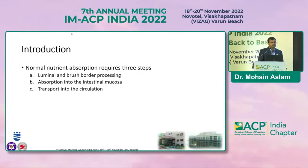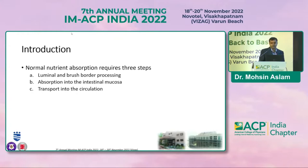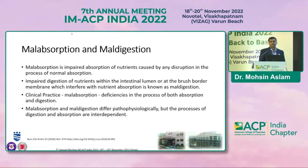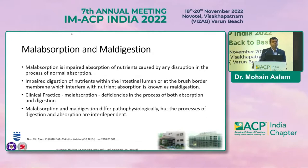Normal nutrient absorption requires three steps. First is luminal and brush border processing, where digestive enzymes break down complex molecules into simple molecules for absorption. Then, absorption across the cells into intestinal mucosa, and transport into the circulation and lymphatics. Malabsorption is impaired absorption of nutrients caused by any disruption in the normal absorption process. Maldigestion is impaired digestion of nutrients within the intestinal lumen due to enzyme deficiencies or at the brush border membrane. In clinical practice, malabsorption refers to deficiencies in both digestion and absorption.